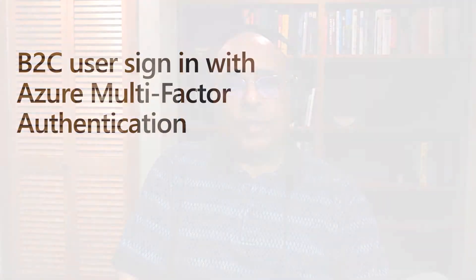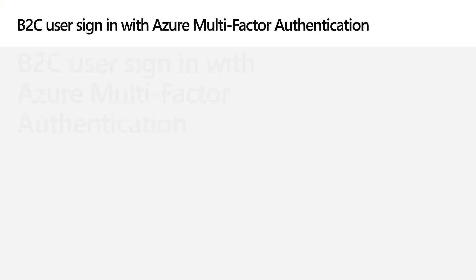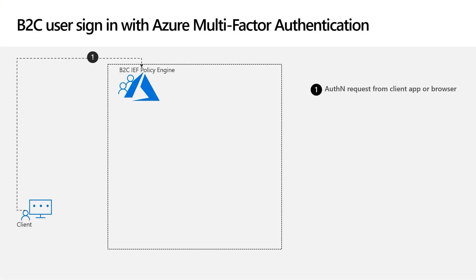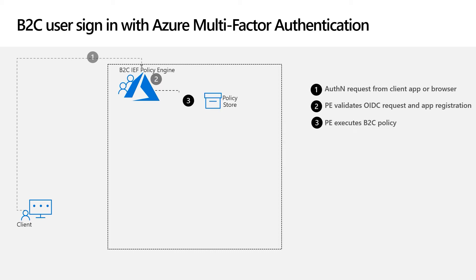Let me explain the steps you will be taking during a typical sign-in. Just like the sign-up flow we saw before, the registered application triggers the sign-in user flow by using a standard OpenID Connect authentication request. The request has to contain the policy ID parameter of the sign-in policy. The policy engine validates the OpenID Connect request by checking the details held in the application registration in the core store. The policy engine then evaluates the policy specified in the URL into memory and sequentially executes the steps.